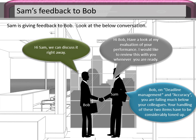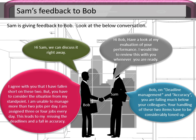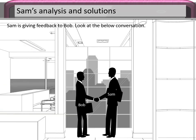Sam tells Bob: 'On deadline management and accuracy, you are falling much below your colleagues. Your handling of these two items has to be considerably toned up.' Bob responds: 'I agree I have fallen short, but I am unable to manage more than two jobs per day when I am assigned three or four. This leads to missing deadlines and a fall in accuracy.' Let's look at Sam's analysis and solutions.